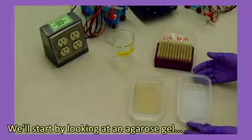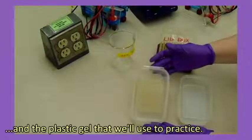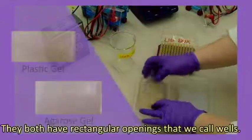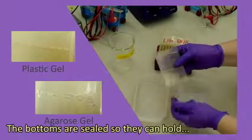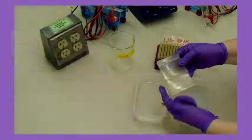We'll start by looking at the agarose gel and the plastic gel that we'll use to practice. They both have rectangular openings that we call wells.